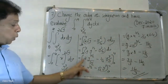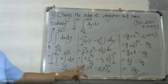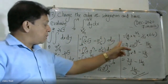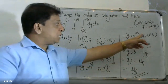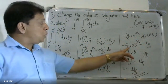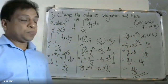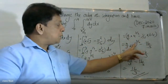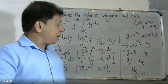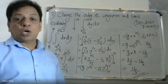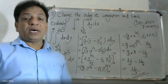Then 4/3 · y^(3/2) − (1/12)y³. Substituting y = 4: 4/3 · 4^(3/2) − (1/12)·64. That is 4/3 · 8 − 16/3 = 32/3 − 16/3 = 16/3. The common denominator is 3, so the final answer is 32/3.